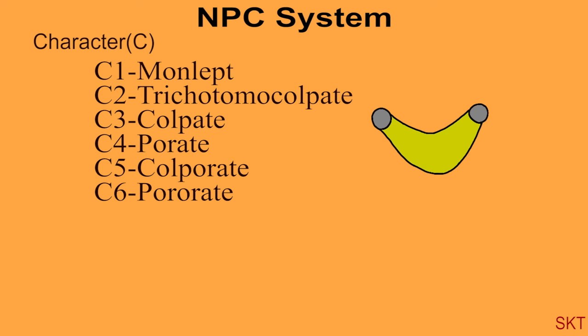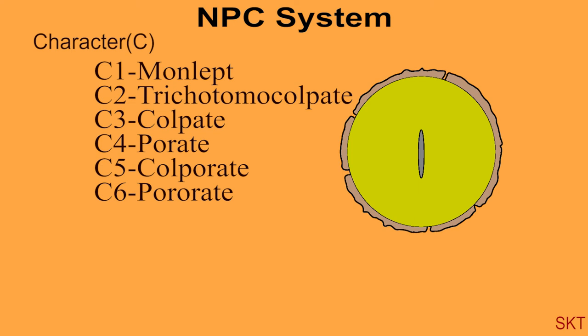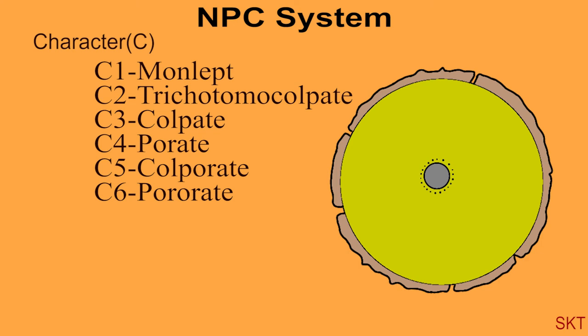C2 is called cricotomo colpate. Here three branched apertures are present and branches are more than two times longer than breadth. C3 has colpate grain, C4 has porate grain, C5 has colporate grain and C6 called as pororate pollen because they have pores around the aperture in pollen grains.